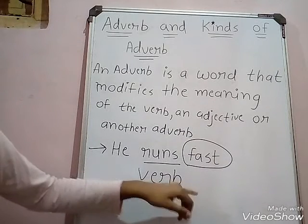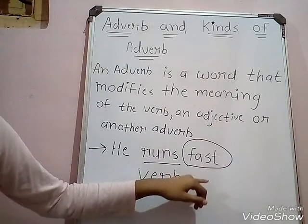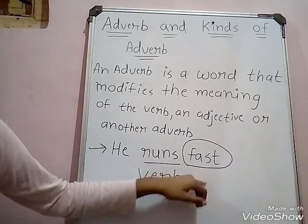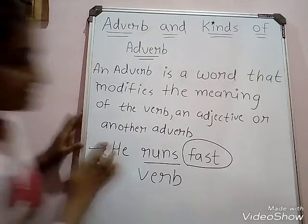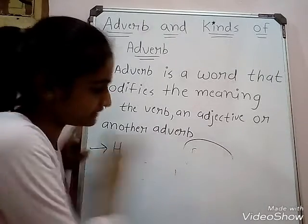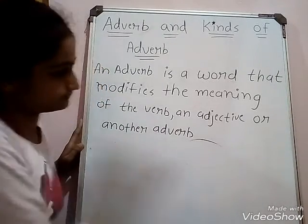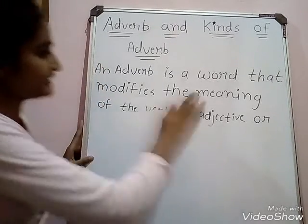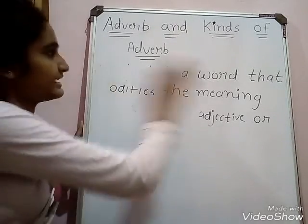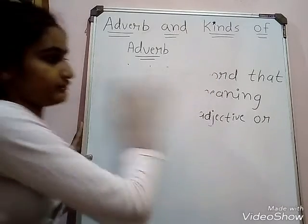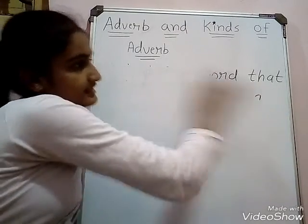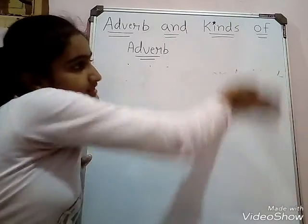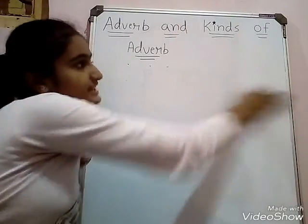He runs — but how does he run? Fast. So 'fast' is our adverb. Now let's see some kinds of adverbs. There are 6 kinds of adverbs.